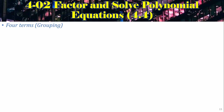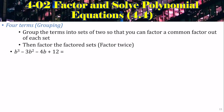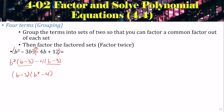If there are 4 terms — still in step 2 — we try grouping. Group the terms into sets of 2, factor out a common factor from each set, then factor the factored sets. Keep any minus sign with its numbers so there's always a plus between the two groups. From the first group, factor out b², leaving (b − 3). From the second group, factor out negative 4, leaving (b − 3). Now factor out the (b − 3), leaving (b² − 4).